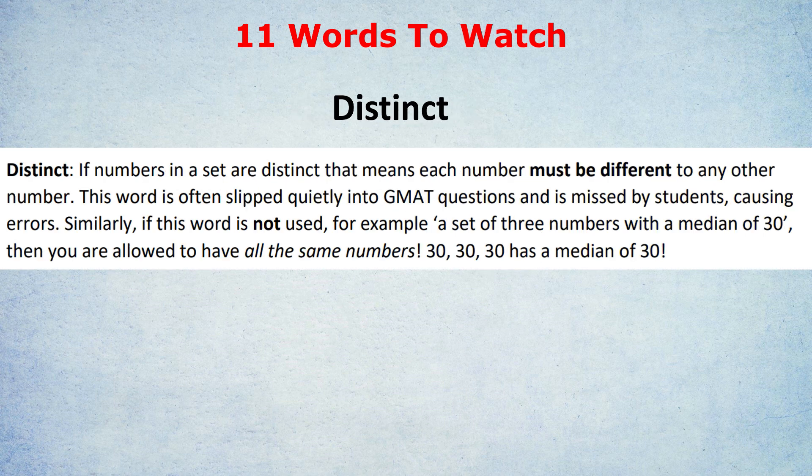The next one is the word distinct. They'll sometimes throw that in there and people won't notice it. But the word distinct means that each of the numbers you pick must be different to the other numbers you pick. I also want you to notice when they don't use the word distinct. As I've written on screen, if they ask for a set of three numbers with a median of 30, they didn't use the word distinct. Meaning that each of the three numbers could be 30. Because 30, 30, and 30 does have a median of 30 and a mean of 30.